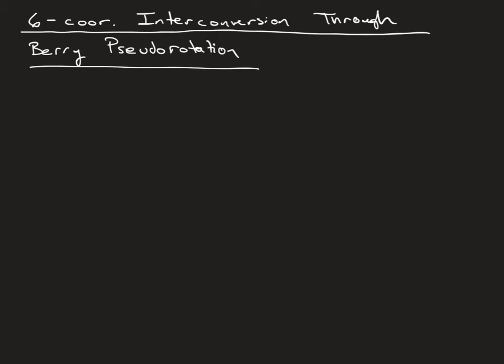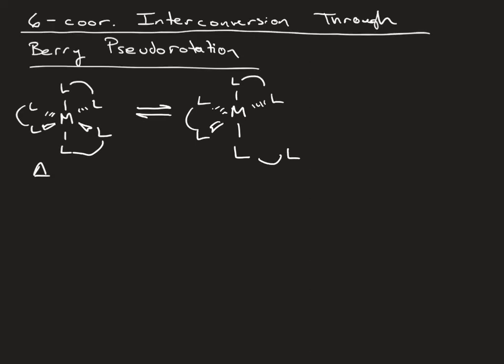Applying this to ligand isomerization in a six-coordinate species, we're going to start off with our delta isomer. First step is the dissociation of one of those bidentate ligands. So you would get this five-coordinate square pyramidal compound. If this ligand comes up and snaps back into place, you go back to the delta isomer. However, this can undergo a Berry pseudorotation.